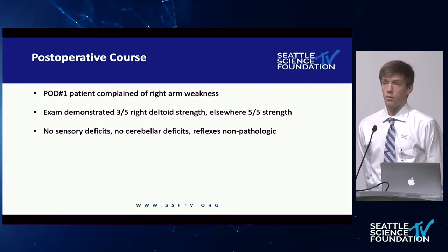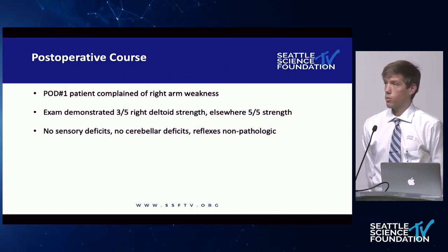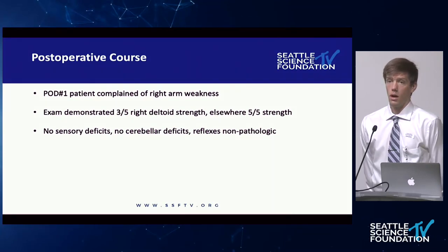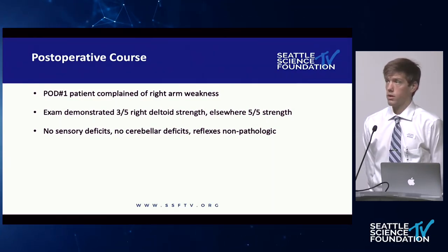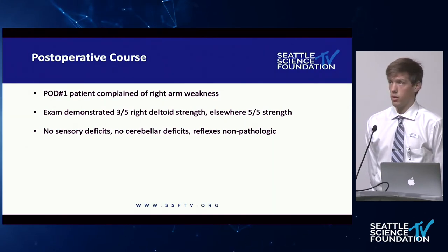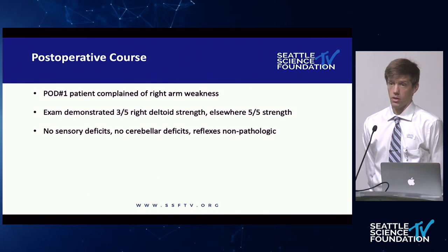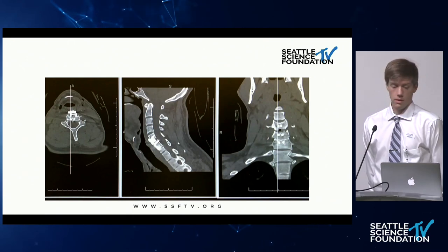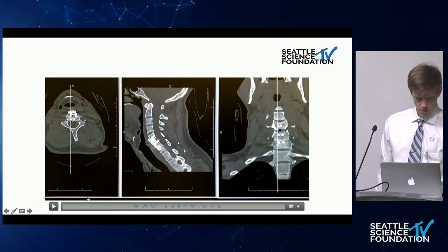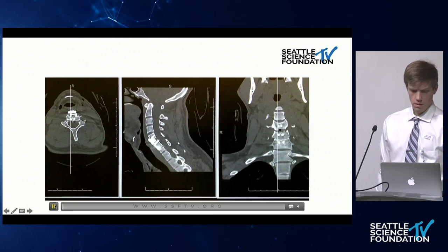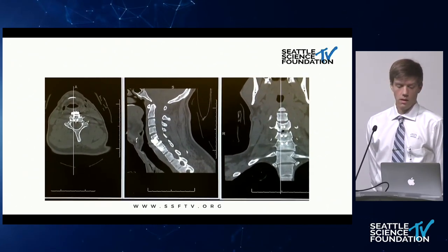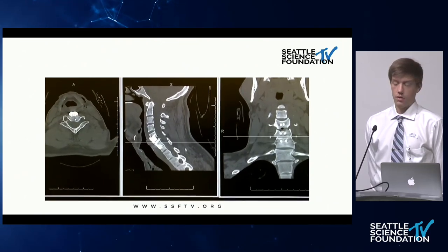On postoperative day one, the patient complained of right arm weakness, specifically difficulty with abduction of the arm. Physical examination demonstrated three out of five strength in the right deltoid; elsewhere, strength was five out of five and symmetric. He had no sensory deficits, no cerebellar deficits, and reflexes were non-pathologic throughout. A repeat CT scan of the cervical spine was obtained, and as you can see, the patient did have a persistent right perched facet.